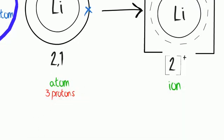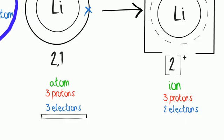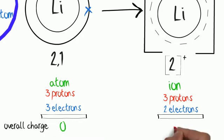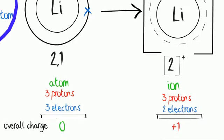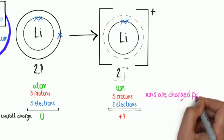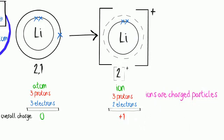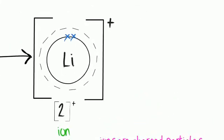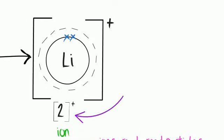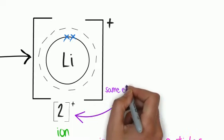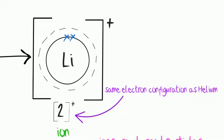To explain further: the atom has three protons and three electrons, so the overall charge is zero. When it donates its outer electron, an ion — which is a charged particle — is formed. The ion still has three protons, because bonding only involves electrons and the nucleus stays the same, but now it only has two electrons, so the overall charge is plus one. The electron configuration of the ion is the same as helium.